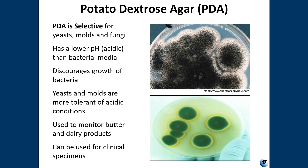PDA is selective for yeast, molds, and fungi. It has a low acidic pH, lower than most bacterial media. This discourages the growth of bacteria because most bacteria can't really tolerate a very low pH. Yeasts and molds are more tolerant of acidic conditions. This kind of media is recommended for plate count methods for foods and dairy products, used to test cosmetics, and also used for growing clinically significant yeast and molds.